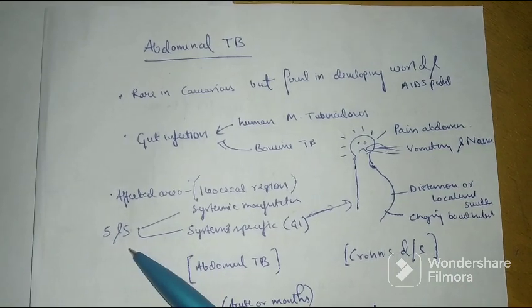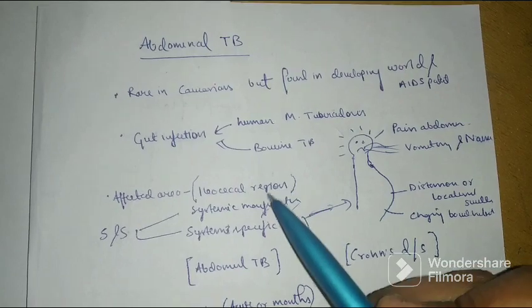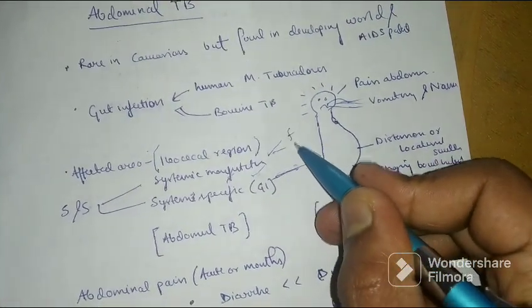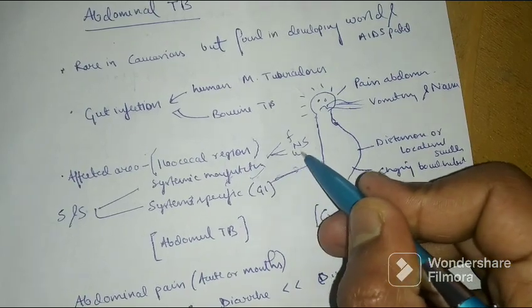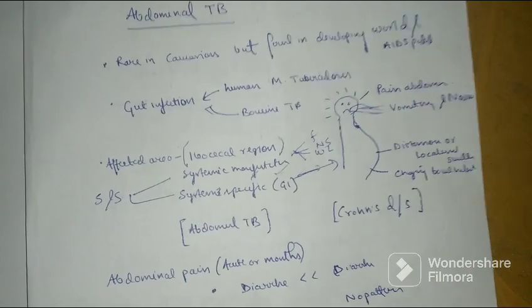Going further, signs and symptoms in Abdominal TB can be systemic manifestations. The systemic manifestations are that of TB: there will be fever, night sweats, weight loss, malaise, and lethargy. Patient will be lethargic.